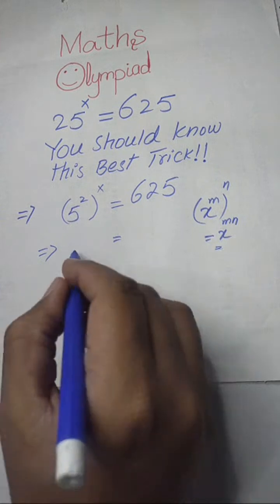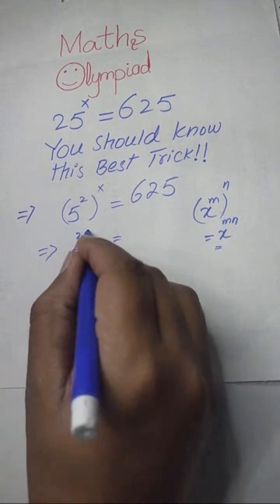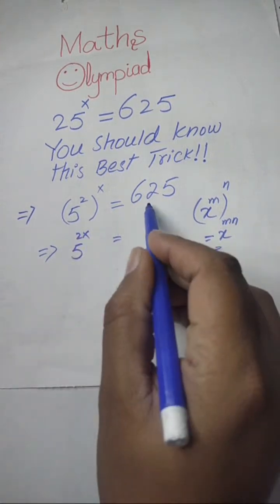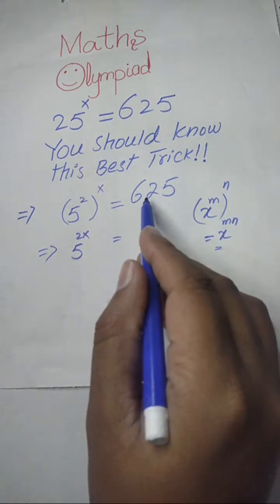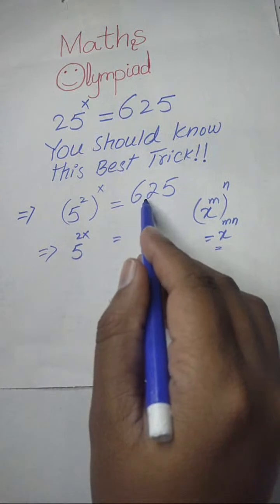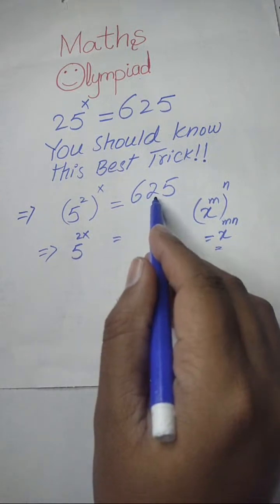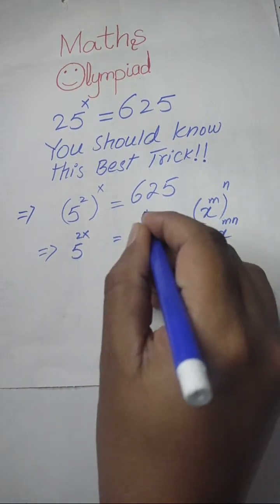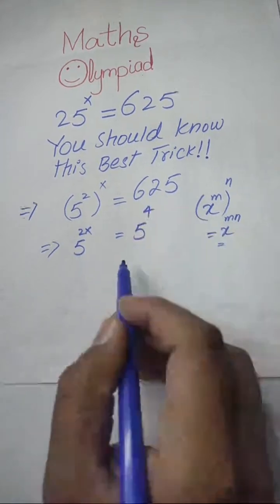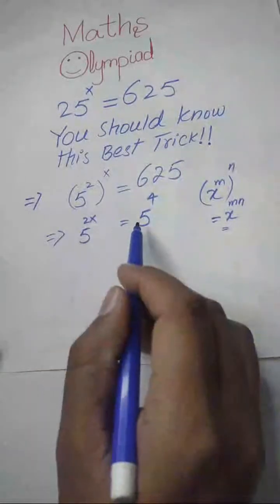We will get 5 to the power of 2x is equal to 625. When we find the prime factorization of 625, then it will become 5 to the power of 4. 5 to the power of 4 equals 625.